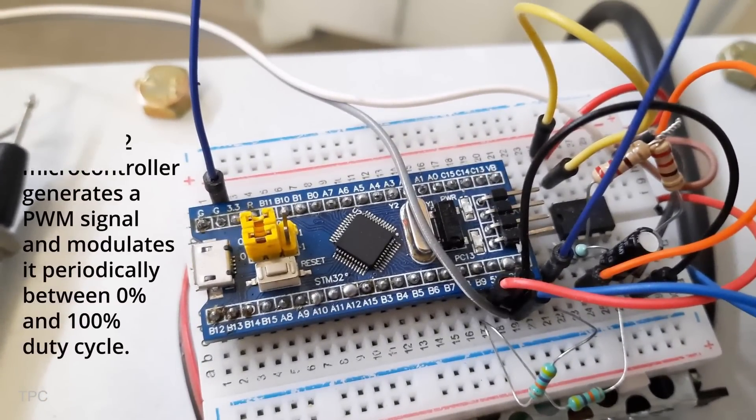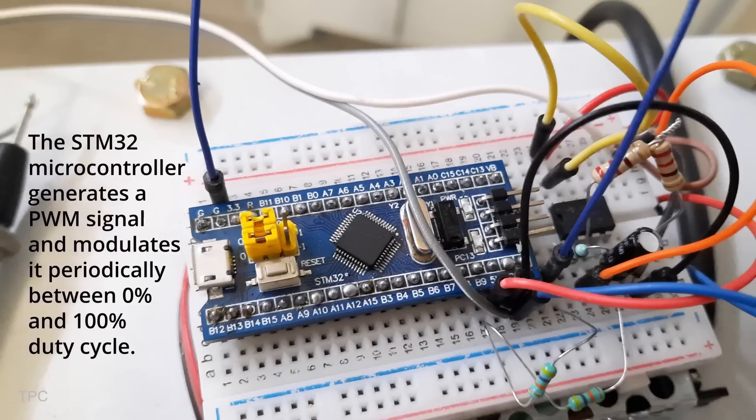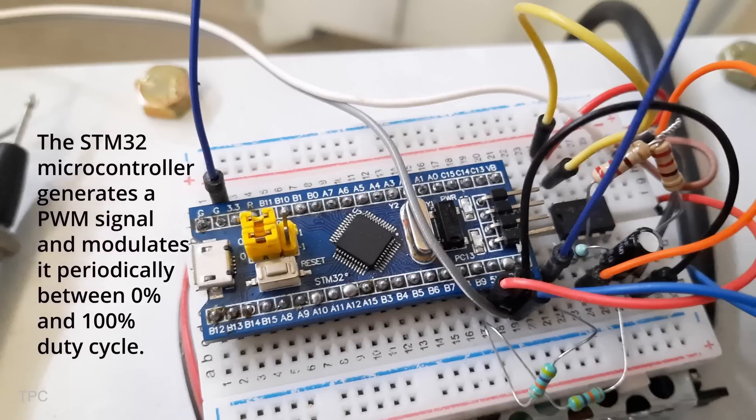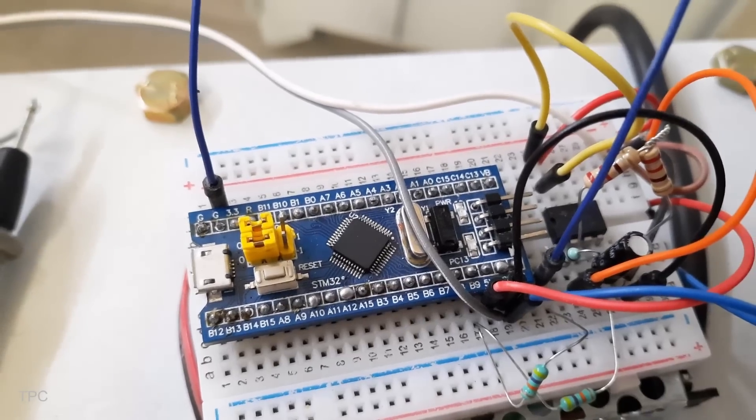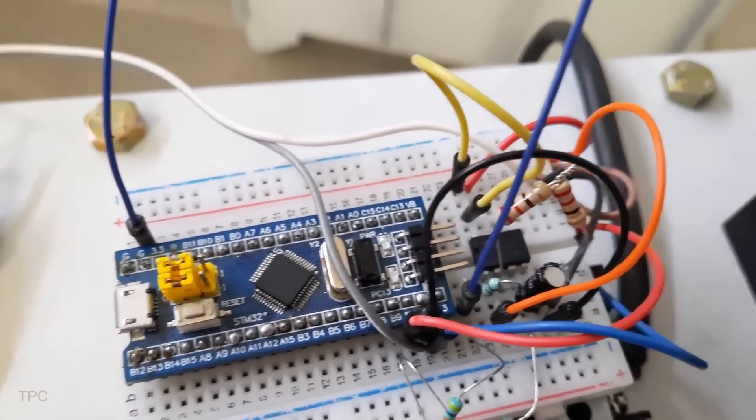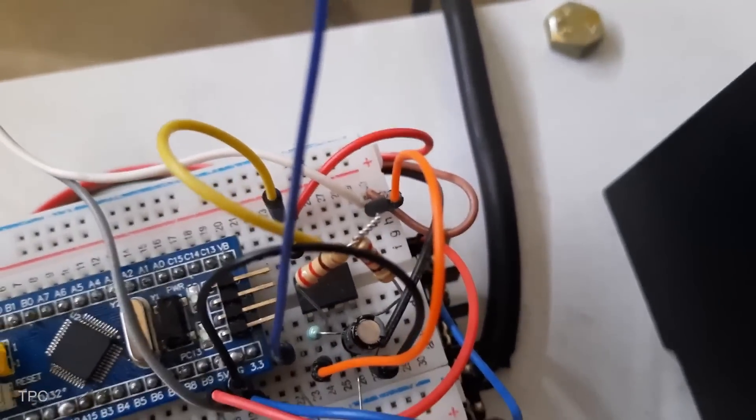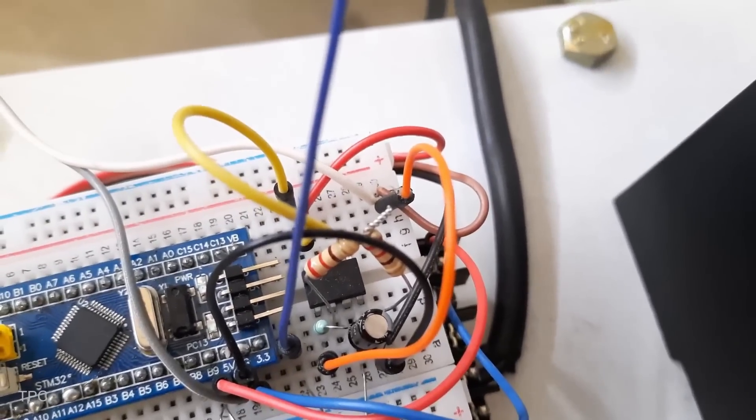First, a PWM signal is generated on the STM32, where the duty cycle is continuously varied between 0% and 100%. This PWM signal is then passed through a low-pass filter, which smooths out the pulses and converts them into an analog voltage.